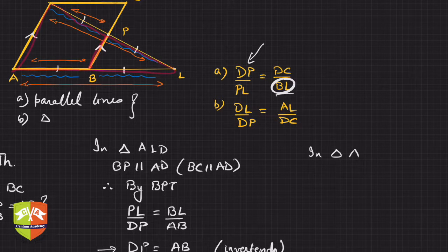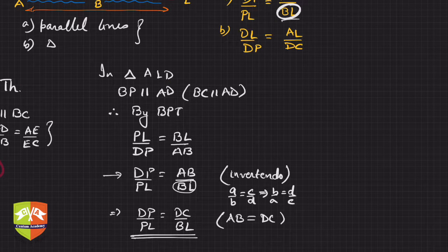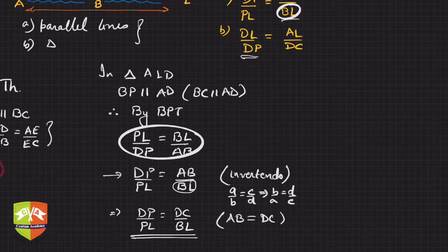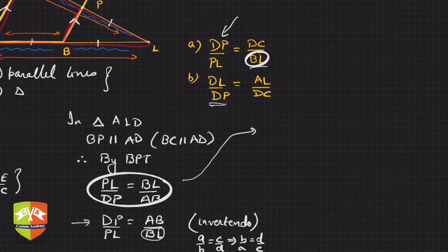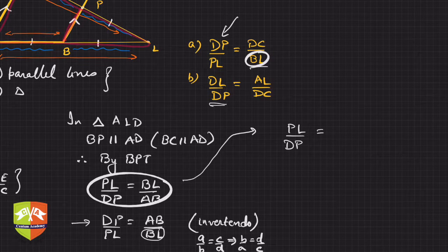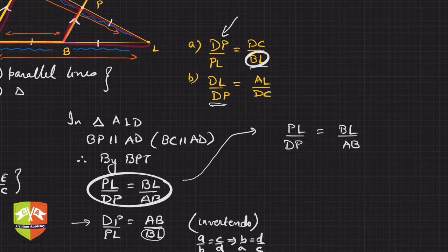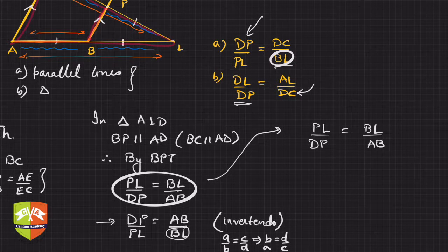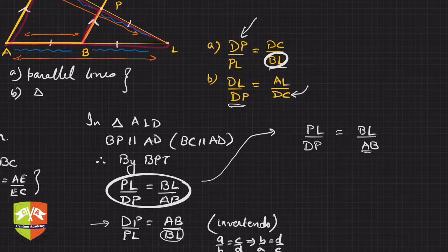We want DP in the denominator. We already have the relation PL upon DP equals BL upon AB. AB is anyway equal to DC, so the denominators match. We just need to get DL on top.